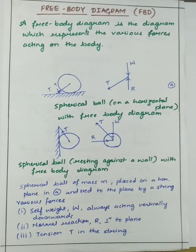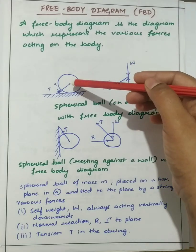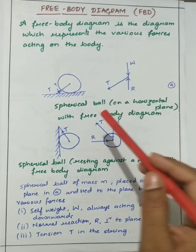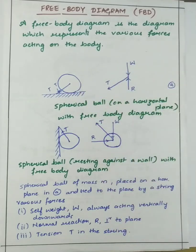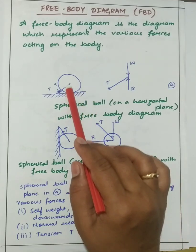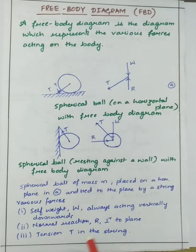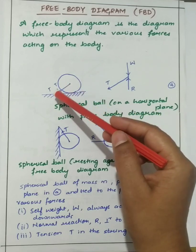The various forces will be: one will be the self weight of the spherical ball W, always acting vertically downwards. Second one will be the normal reaction R perpendicular to the plane. Then third one will be the tension in the string.